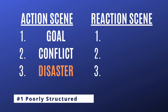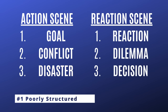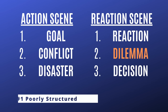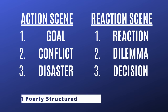That brings us to reaction scenes. Reaction scenes follow the pattern of reaction, dilemma, decision. The character has an emotional reaction — usually to that disaster or resolution in the prior scene. Then they face a dilemma: what do we do next? There are usually two or more bad options. Eventually they make a decision, and once they do, you move on to another action scene — goal, conflict, disaster — then reaction, dilemma, decision.